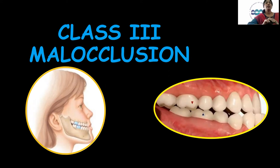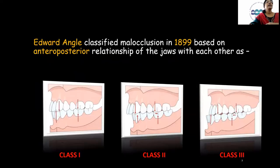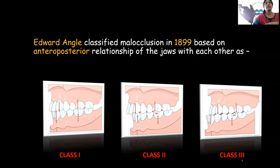Good morning. Today our topic for discussion is Class 3 malocclusion. Edward Angle classified malocclusion in 1899 based on the anteroposterior relationship of the jaws with each other as Class 1, Class 2, and Class 3 malocclusion.